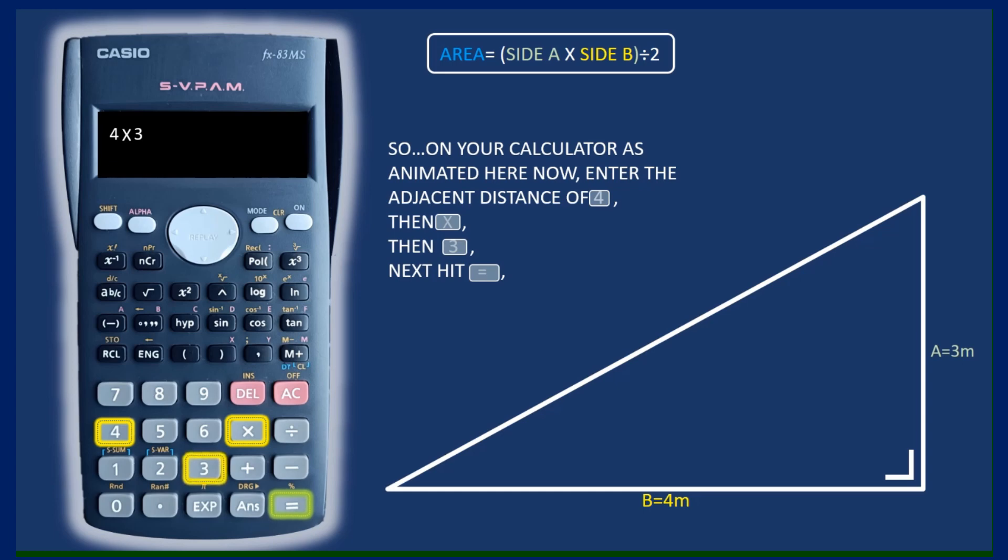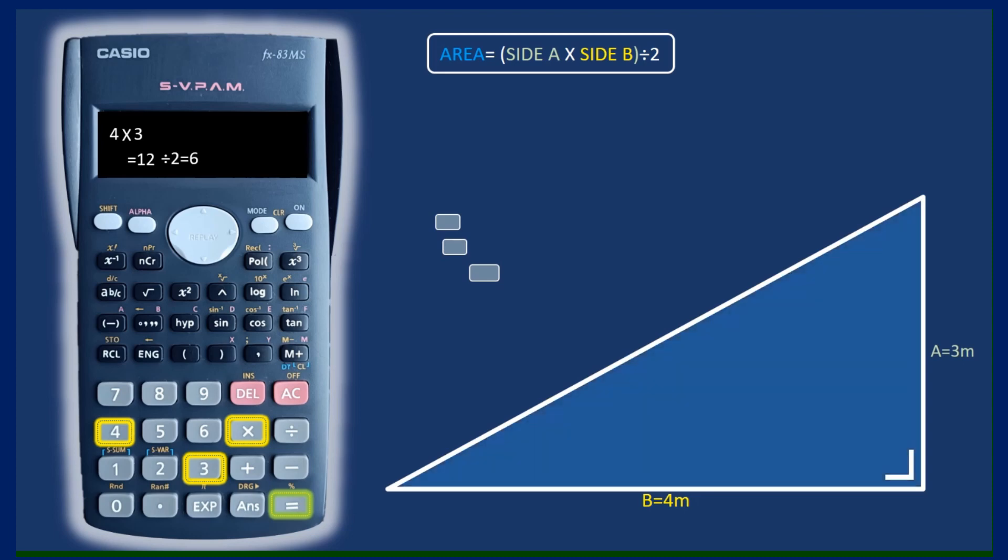And it's very important when you do get that answer that you write the answer as being 6 metres squared. That little 2 there after the m on 6 metres squared. Very important that you don't leave that out. That's very important in any area question you do.